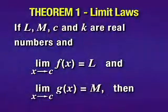If L, M, c, and k are real numbers and the limit as x approaches c of f(x) equals capital L and the limit as x approaches c of g(x) equals capital M, then first the sum rule.